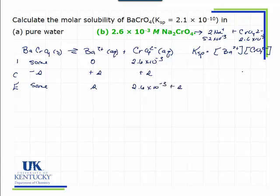Now we're ready to add it to our expression. Ksp was 2.1 times 10 to the minus 10. That is going to be equal to the barium concentration, which is S, and the chromate concentration, which is 2.6 times 10 to the minus 3 plus S.